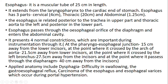It extends from the laryngeal pharynx to the cardiac end of the stomach. The esophagus has three parts: cervical, that is 4 cm; thoracic, nearly 20 cm; and abdominal, nearly 1.25 cm. The esophagus lies posterior to the trachea in the upper thoracic region and aorta in the lower part. Esophagus passes through the esophageal orifice of the diaphragm and enters the abdominal cavity. It presents four normal constrictions which are important during instrumentation.